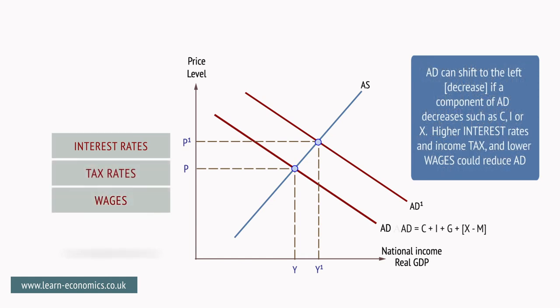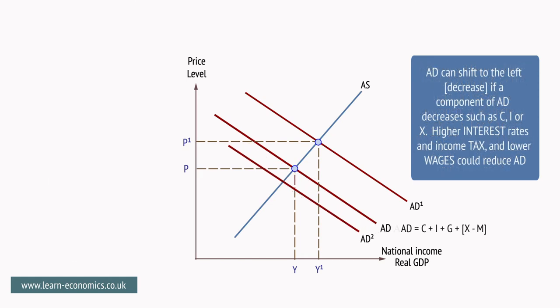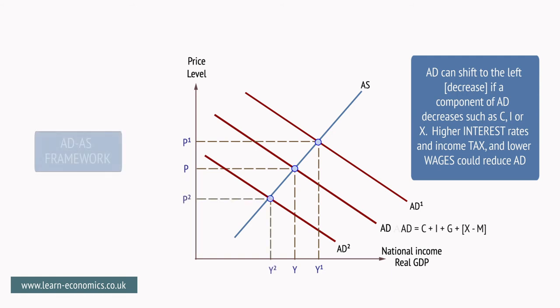AD can shift to the left — a decrease — if a component of AD decreases. Higher interest and tax rates, and lower real wages, are likely to reduce AD.